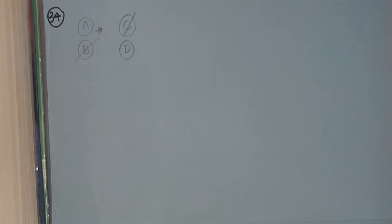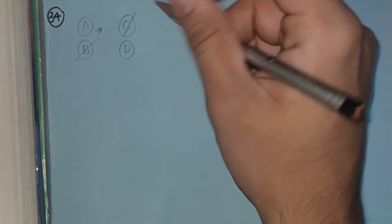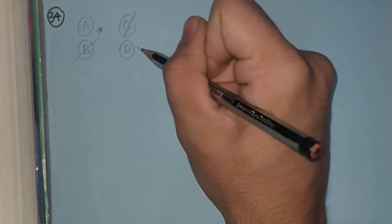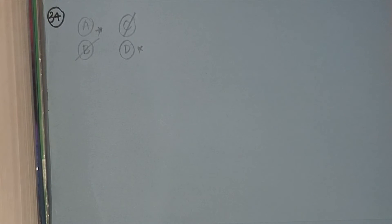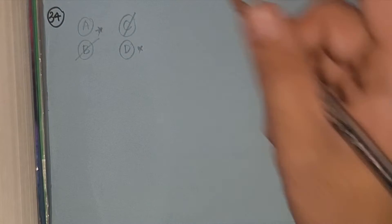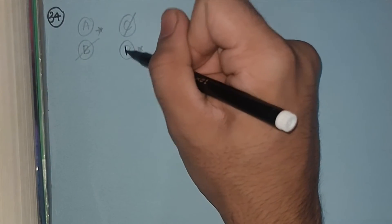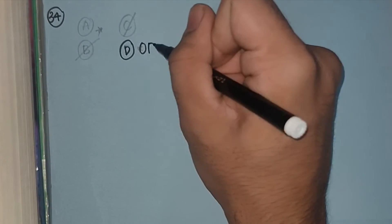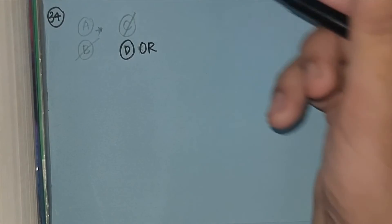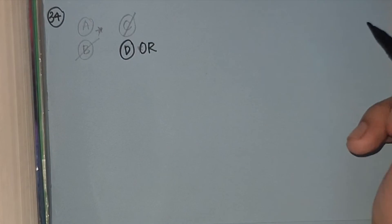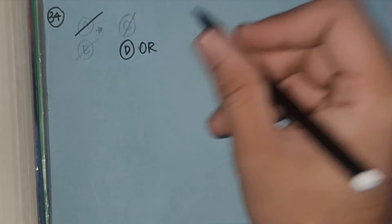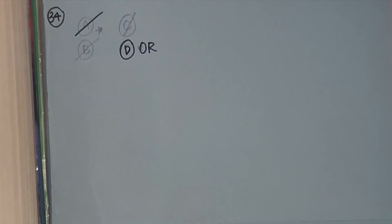OR has the same first row. Looking at the second row: inputs 0 and 1 give output 1. We immediately know the answer is D — the OR gate — because in an AND gate, this would be a false value. So A is eliminated and our answer is D.